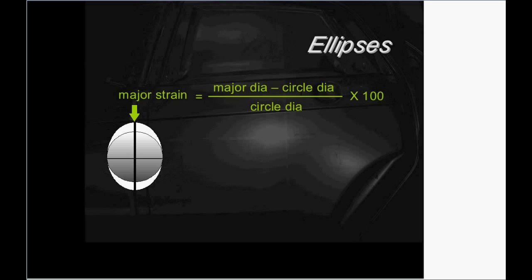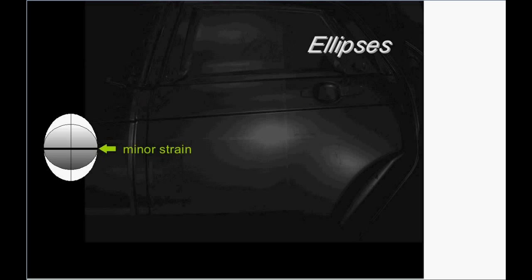And that's just simply the major diameter minus the circle diameter divided by the circle diameter. And we multiply it by 100 just so we can avoid writing .05 for 5 and that kind of thing.